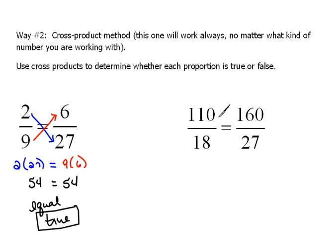Let's look at this one here real quick. Here we have, again, let's look at our cross-products. So, 110 times 27, hopefully, is the same as 18 times 160.